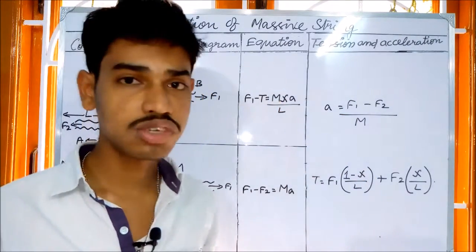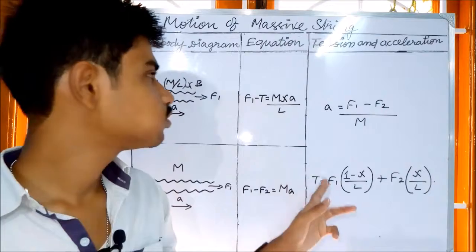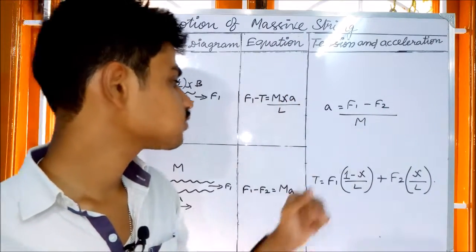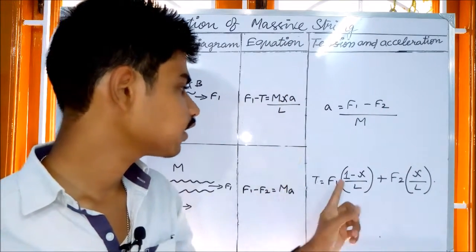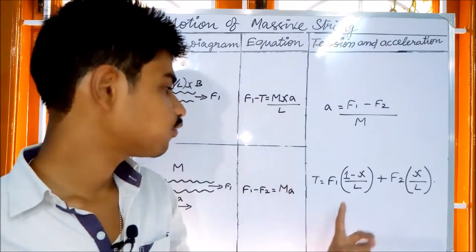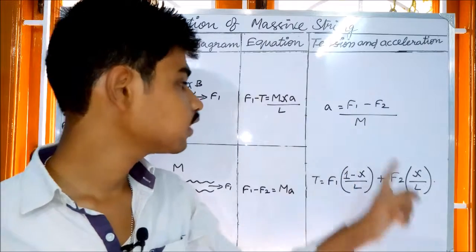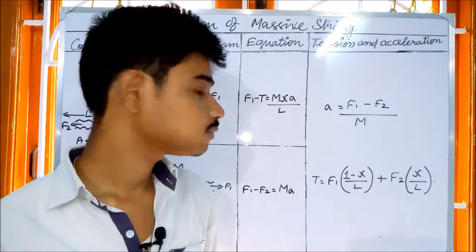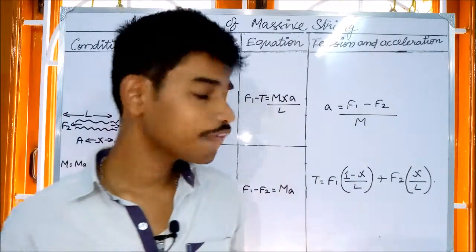So, we have to substitute the value. We have to substitute mass. Mass cancels. That is (1 minus x by L), that is F1, plus F2 times (x by L). So, this is the tension.